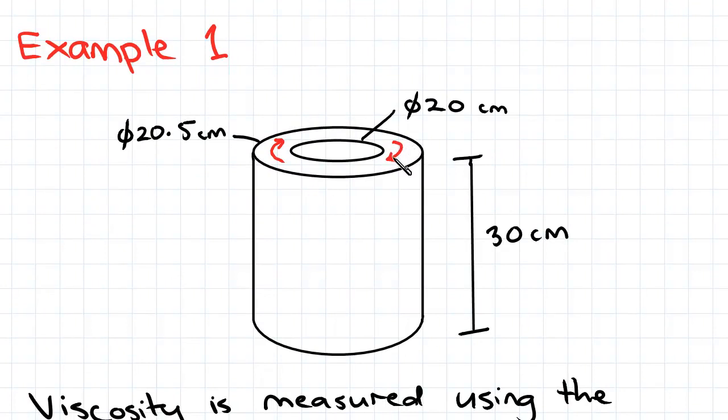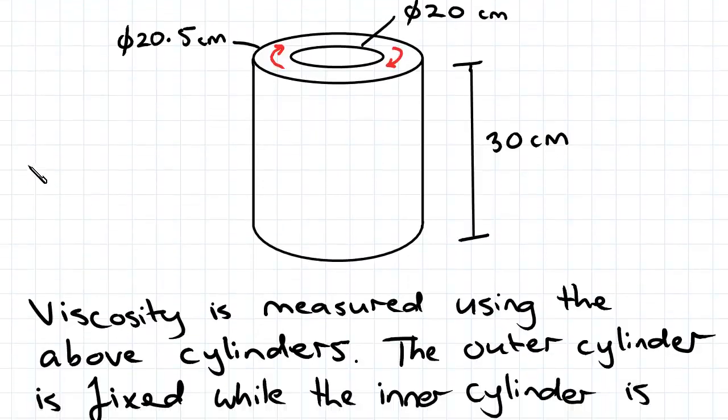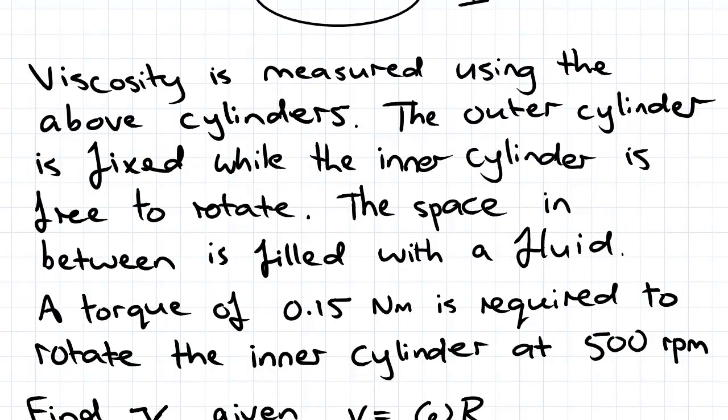So there is a fluid in between the two cylinders which rotates. The inner cylinder is free to rotate while the outer cylinder is fixed, and we use that to measure viscosity.